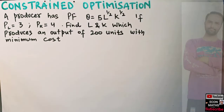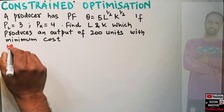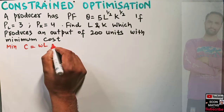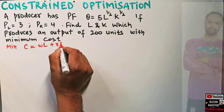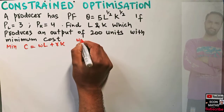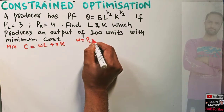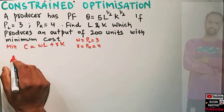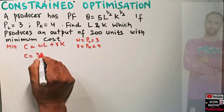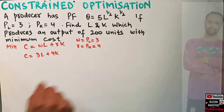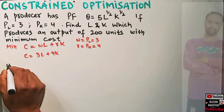So the question is about cost minimization — we want to minimize our cost. We know cost is equal to wage rate times units of labor plus rental rate of capital times units of capital. The wage rate here is the price of labor, which is 3, and the rental rate of capital is the price of capital, which is 4. So we want to minimize C = 3L + 4K.